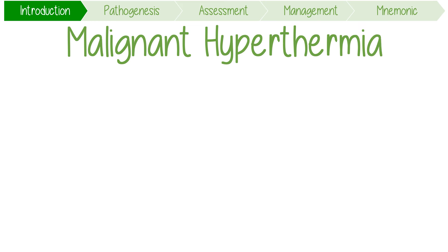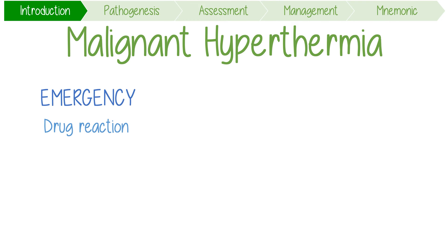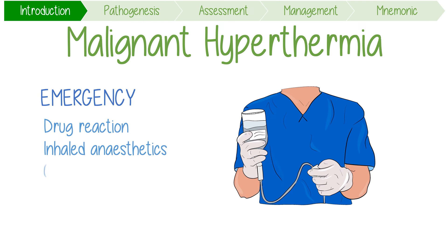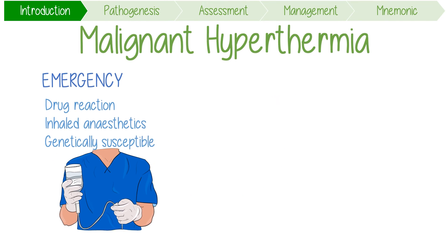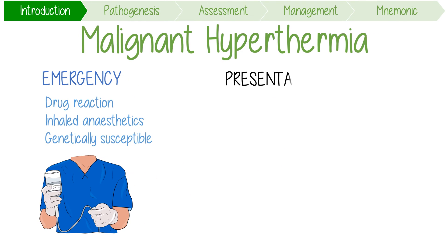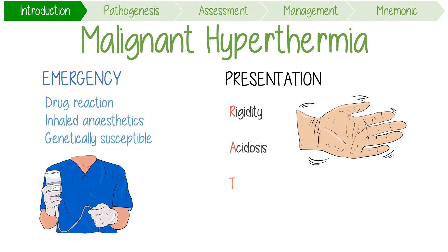Malignant hyperthermia is a life-threatening emergency caused by a drug reaction to inhaled anesthetics in patients that are genetically susceptible. It presents with the classic triad of RAT symptoms, which stands for skeletal muscle rigidity, acidosis, and a really high temperature.